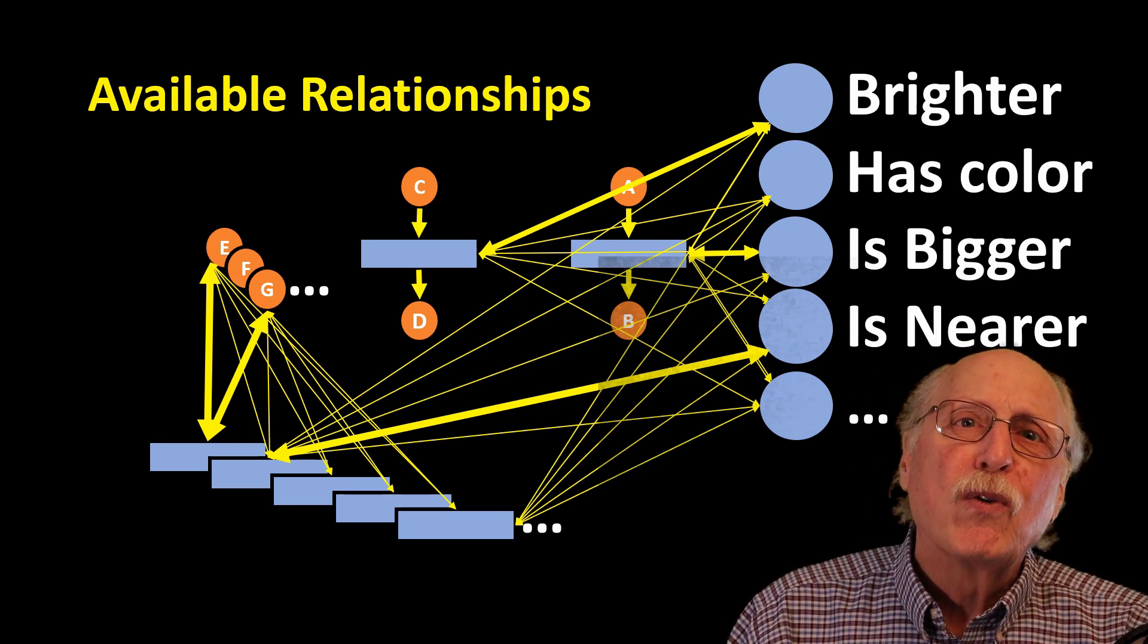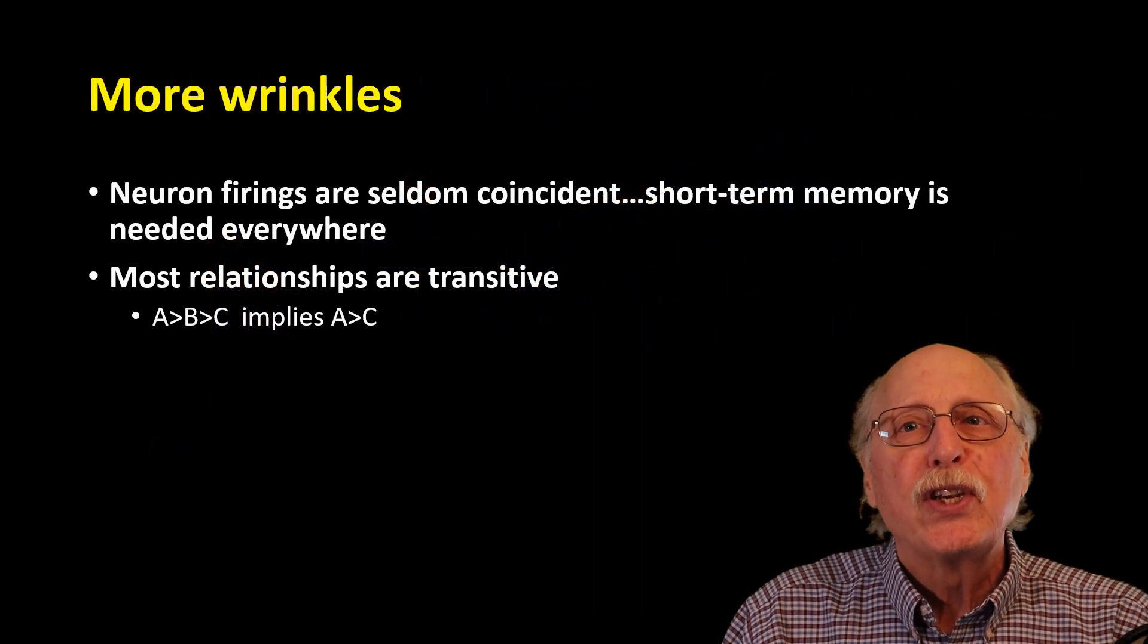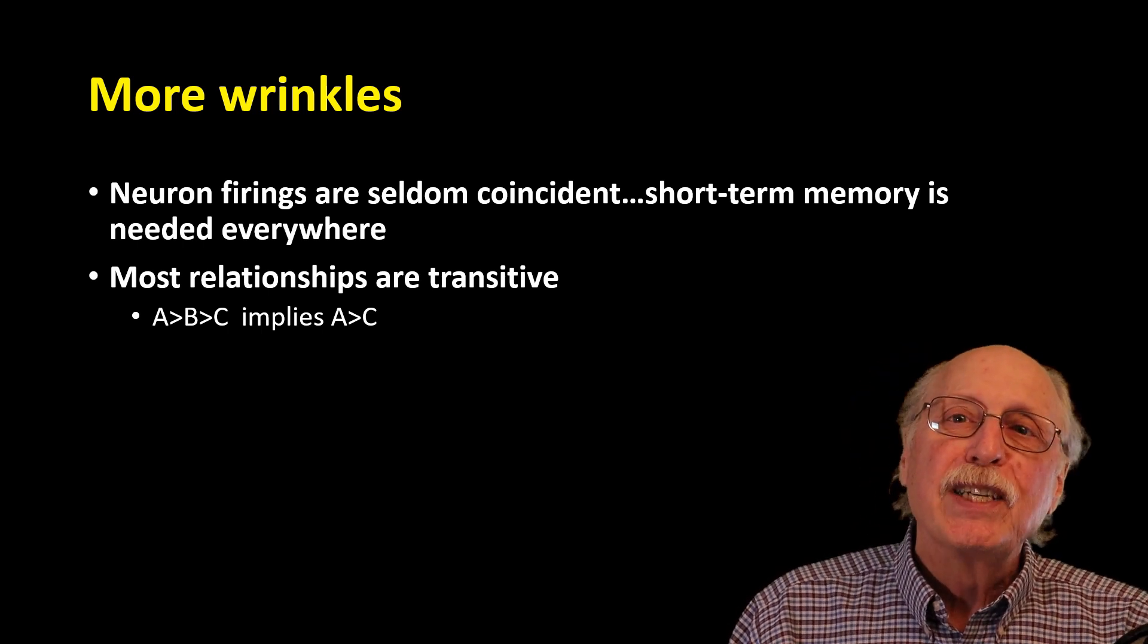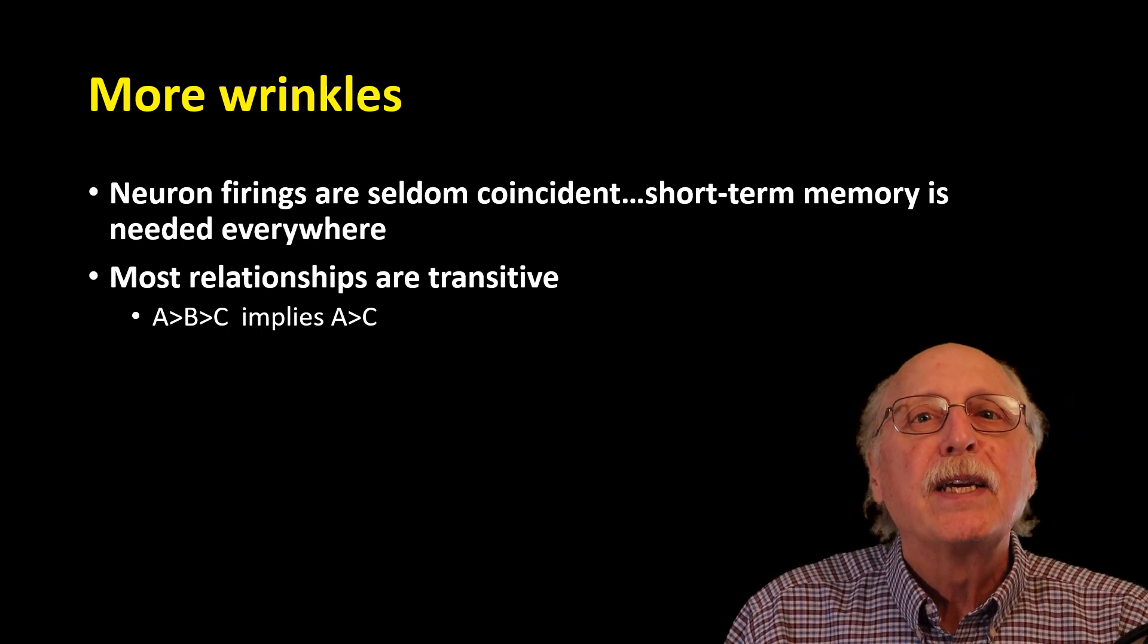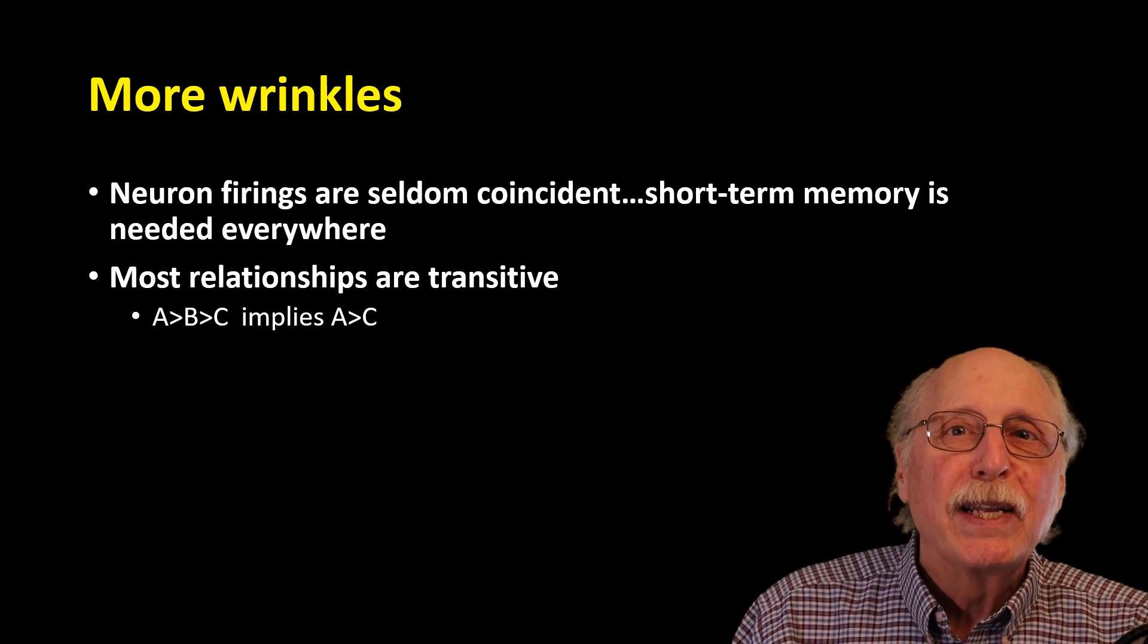To add a few more wrinkles to the process, consider that neuron firings are seldom exactly coincident. So short-term memory is going to be necessary everywhere. This means that wherever I've drawn a single neuron, two neurons will likely be needed.